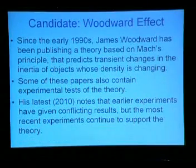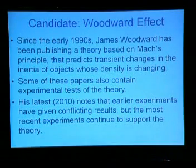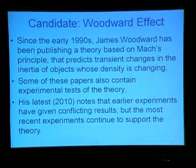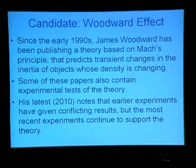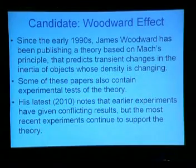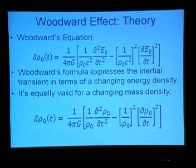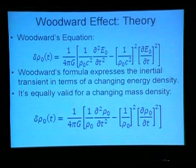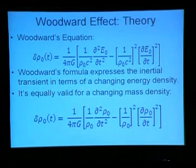Another candidate for inertial manipulation is, for brevity, the Woodward effect. Since the early 1990s, James Woodward has been publishing a theory based on Mach's principle that predicts transient changes in the inertia of objects whose density is changing. Some of his papers contain experimental tests. His latest — at least the latest I found in 2010 — notes that earlier experiments gave conflicting results, but the most recent experiments continue to support the theory. He ultimately derives an equation for transient inertial mass changes relating the rate of change of energy density — both first and second derivatives — to a transient change in inertia.